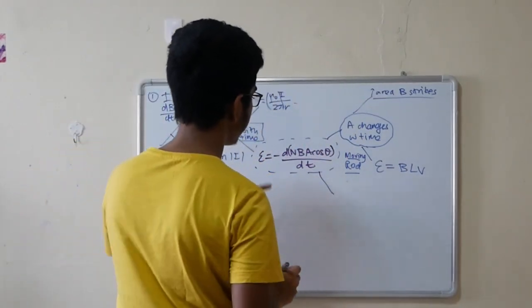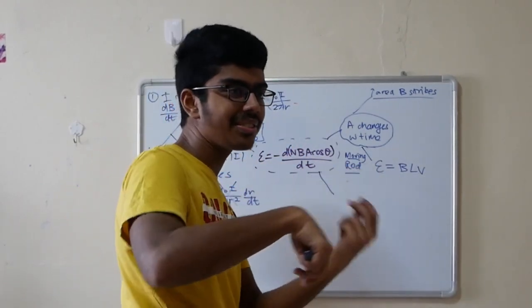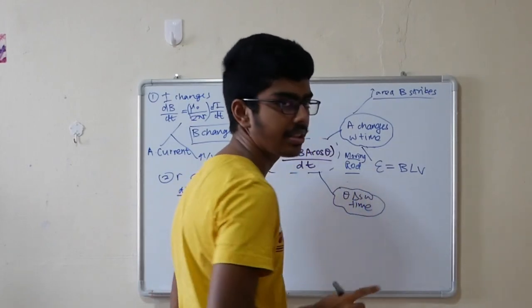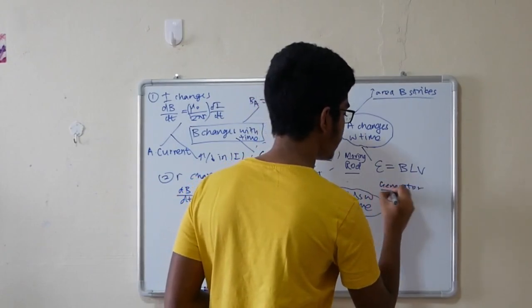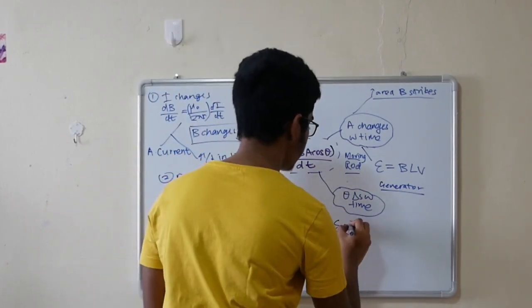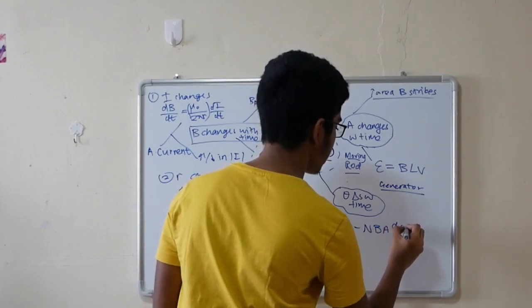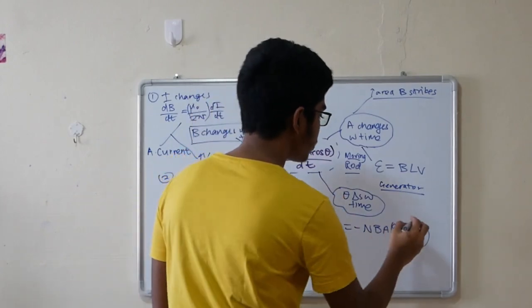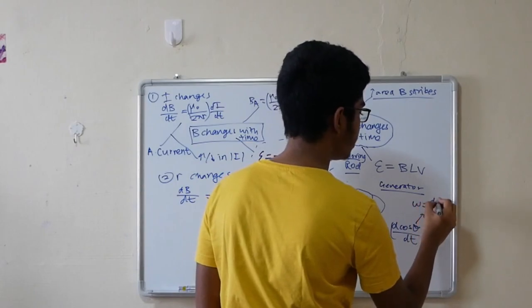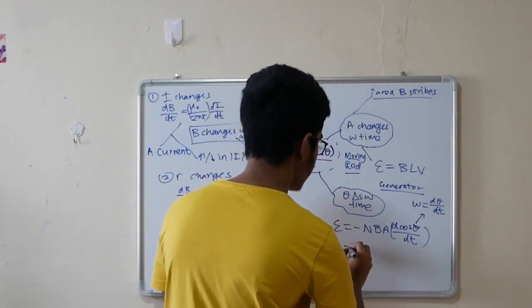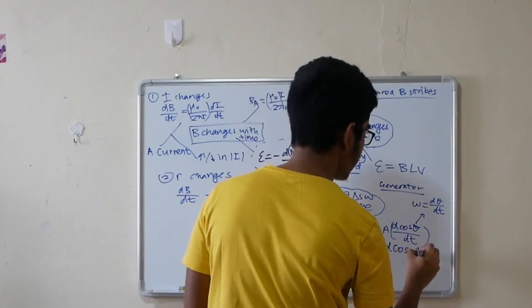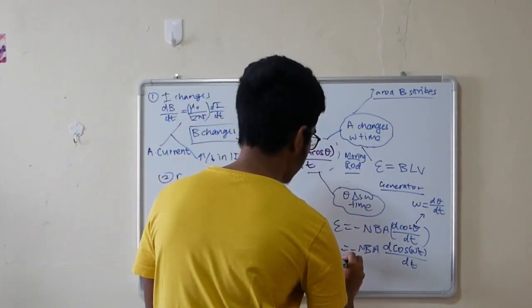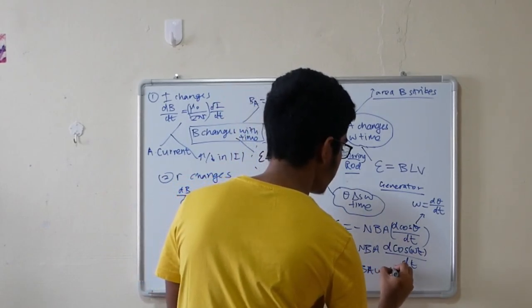What's the third thing that can change? We have dealt with B, we have dealt with A. How can you change the number of turns? It's quite hard. Cosine of theta, or theta, changes with time. How do you deal with theta changes? This occurs in something called a generator. Now we are going to break down what happens in a generator. E equals minus NBA d(cosine theta) over dt, because all the rest are constant. Only the angle at which B strikes the coil changes. Now theta, if we go back to circular motion, omega is dθ over dt. So it's just minus NBA d(cosine ωt) over dt. If we differentiate cosine ωt, you get negative sine. So negative cancels and you get NBA ω sine ωt.